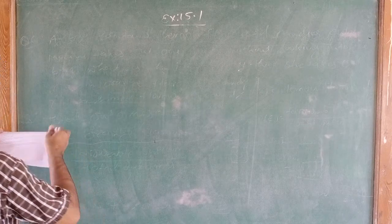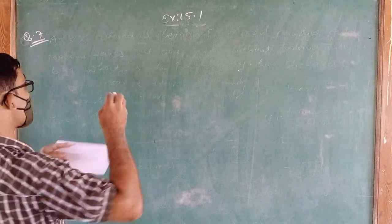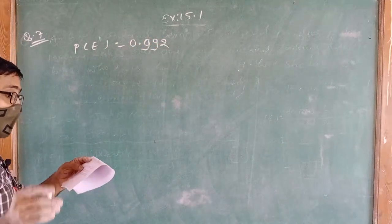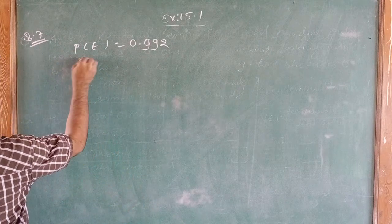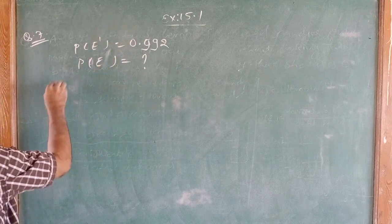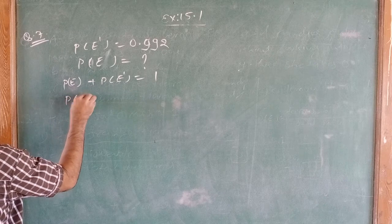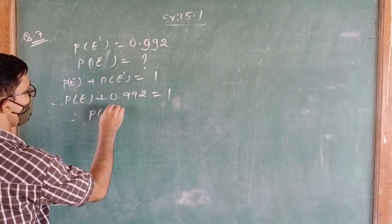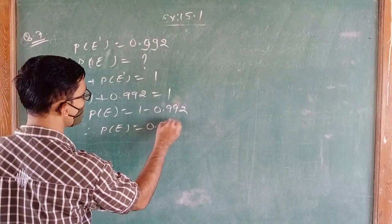Question number 7: In a group of three students, the probability of two students NOT having the same birthday is 0.992. What is the probability that two students HAVE the same birthday? Using the formula P(E) + P(not E) = 1: P(E) + 0.992 = 1, so P(E) = 1 − 0.992 = 0.008.